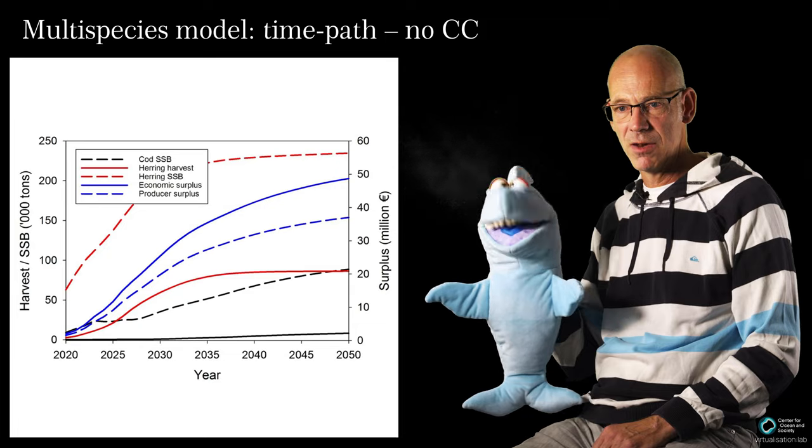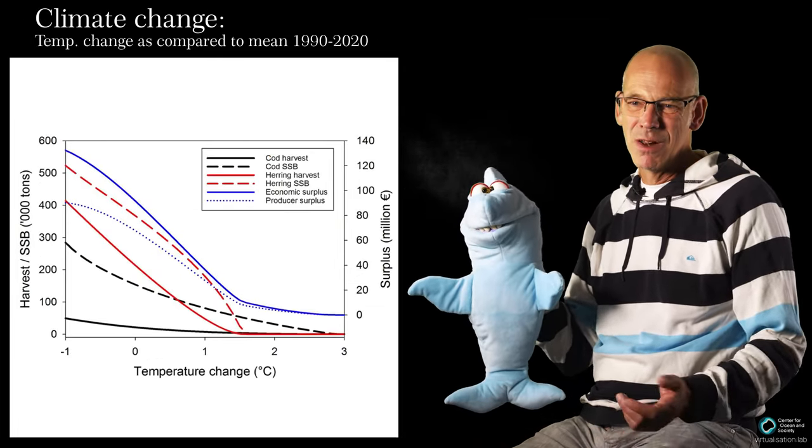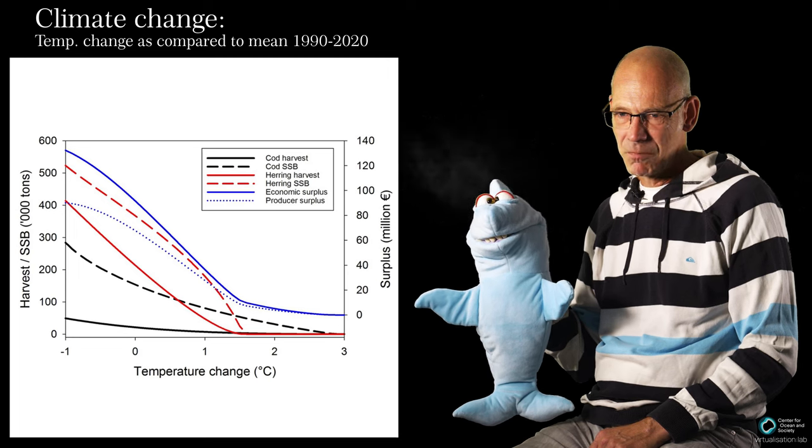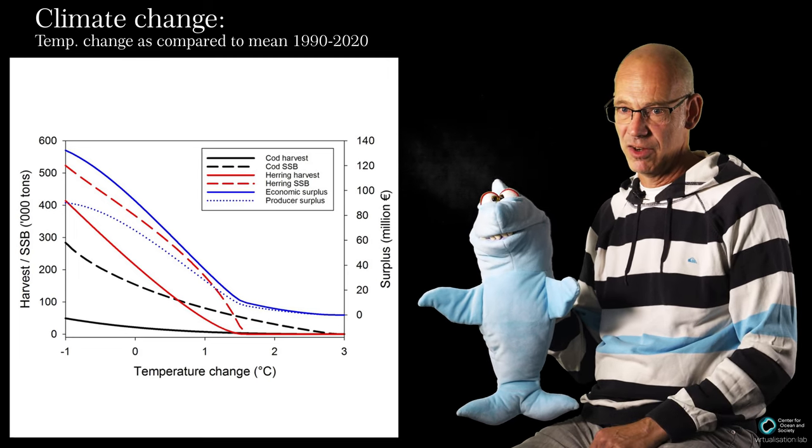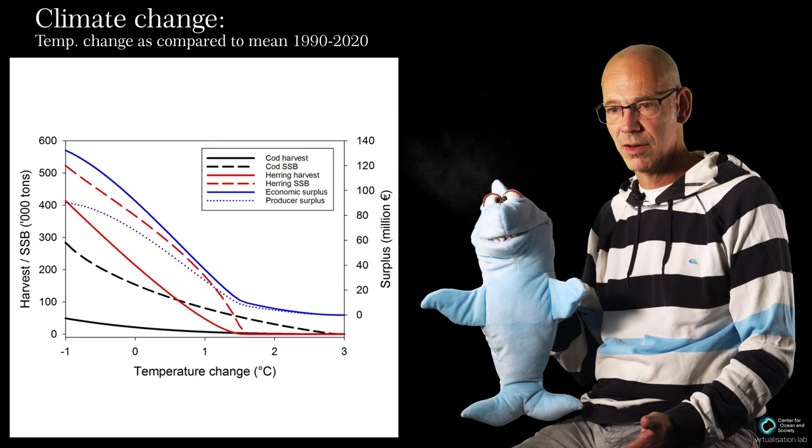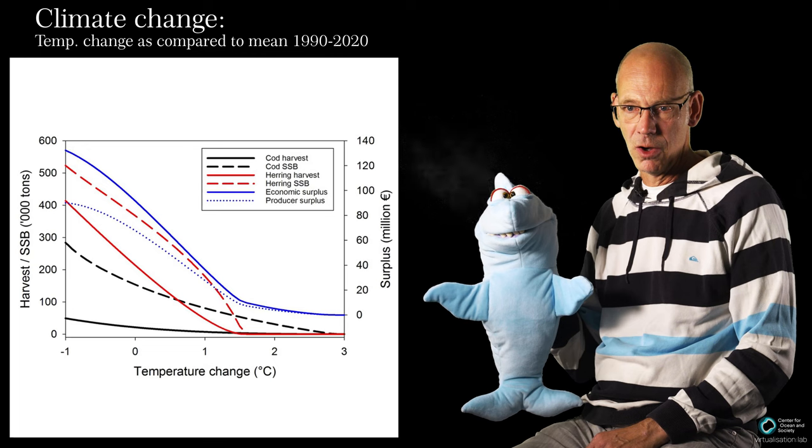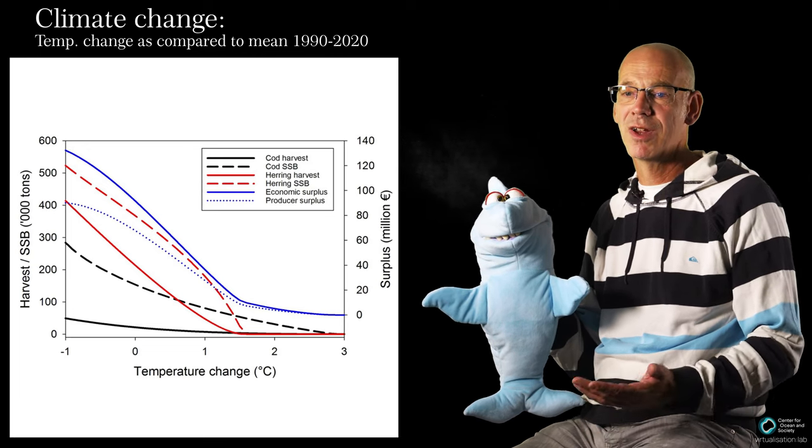Nice! But what happens with climate change? Well, this is not so nice. Here we have temperature change as compared to the mean of 1990 to 2020 on the x-axis. With further temperature increase, optimal stock size of cod and herring decrease.